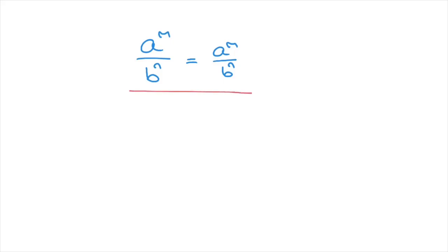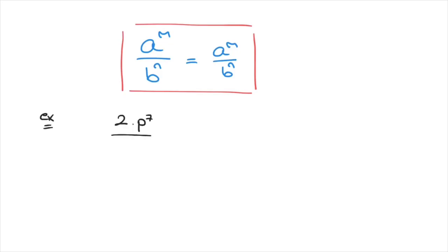Although this formula isn't particularly exciting, it is nonetheless very important. For instance, if asked to simplify 2 times p to the power of 7 over q to the power of 5, this rule tells us it cannot be simplified further. All we can state is that it equals 2 times p to the power of 7 over q to the power of 5, since p and q are different bases and there is no rule for simplifying this expression.